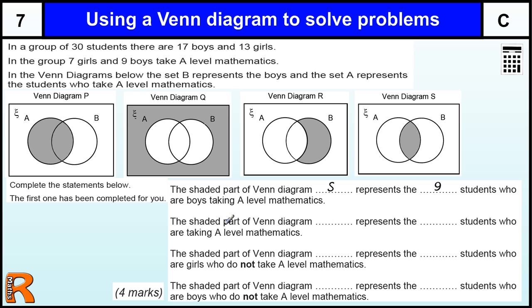We've got to pick out a Venn Diagram for students taking A level maths, so that's the one which is completely colored in A—that's Diagram P. How many students take A level maths? Seven and nine, which is sixteen.